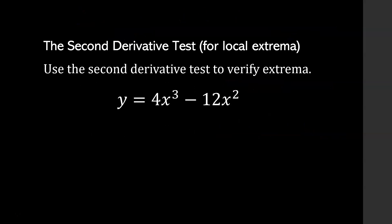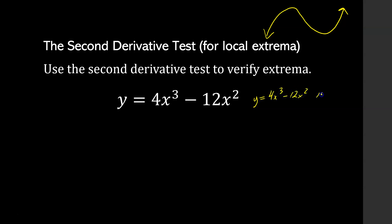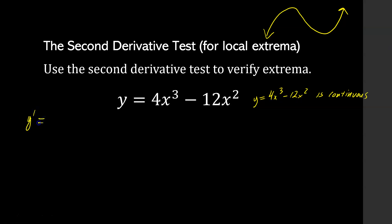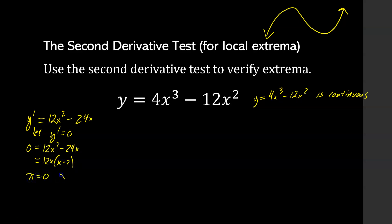Let's give you one example. So the second derivative test to verify the extreme values of 4x cubed minus 12x squared. Hopefully you're thinking of a graph something like this. We say y equals 4x cubed minus 12x squared is a polynomial, so it is continuous and differentiable everywhere. We're going to find y prime, which is 12x squared minus 24x. We're going to let y prime equal zero, and factor to get 12x times (x minus 2), giving x equals 0 and x equals 2.